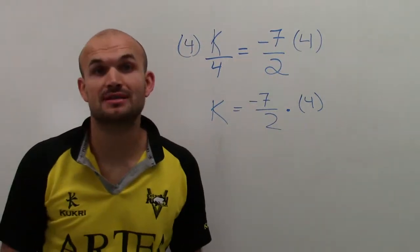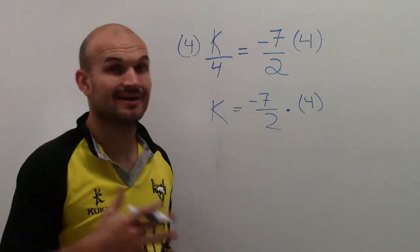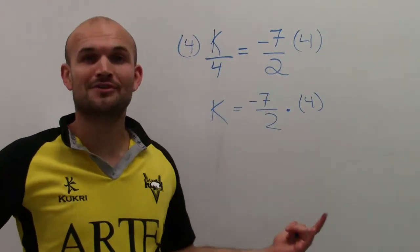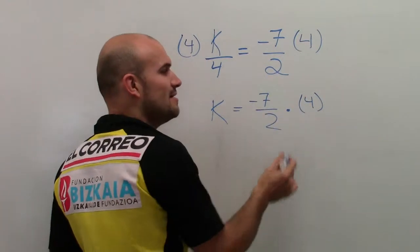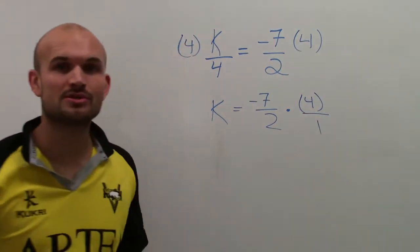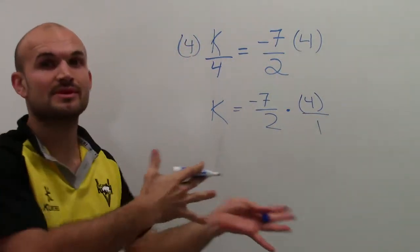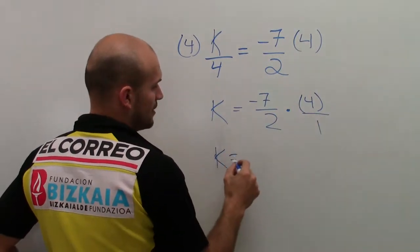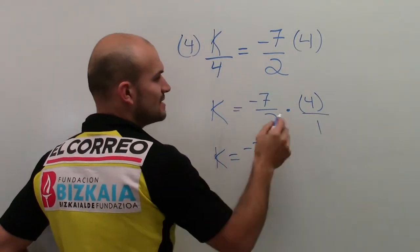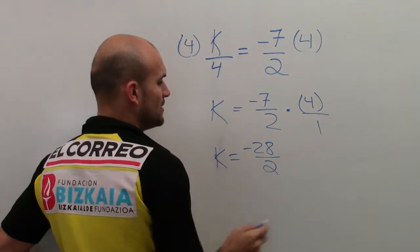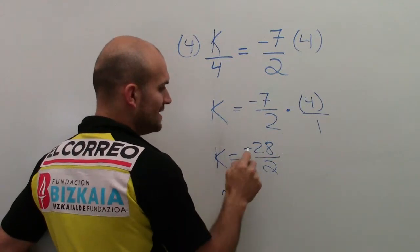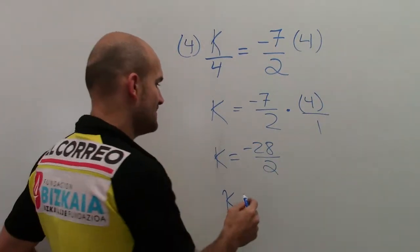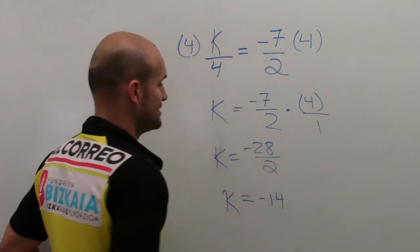Now how do we multiply a fraction times a whole number? Just remember: to take a fraction times a whole number, convert the whole number to a fraction, and with fractions we just multiply straight across. Numerator times numerator, which is negative 28. Denominator times denominator, which is 2. Now we have k equals negative 28 divided by 2. Always reduce the fraction whenever you can. That equals negative 14.